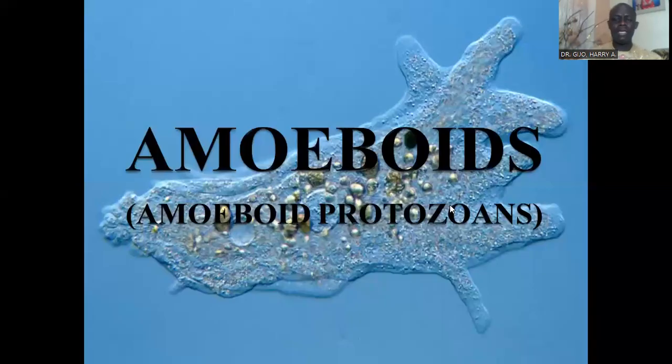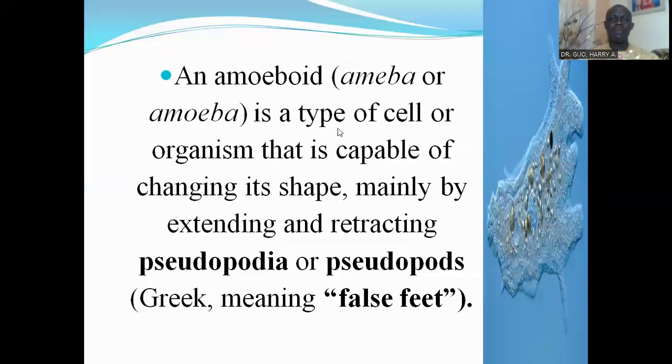Today we want to look at the amoeboid protozoans. The amoeboid protozoans are protozoans characterized by the possession of pseudopodia. An amoeboid is a type of cell or organism capable of changing its shape, mainly by extending and retracting pseudopodia or pseudopods. They are shapeless protozoans.